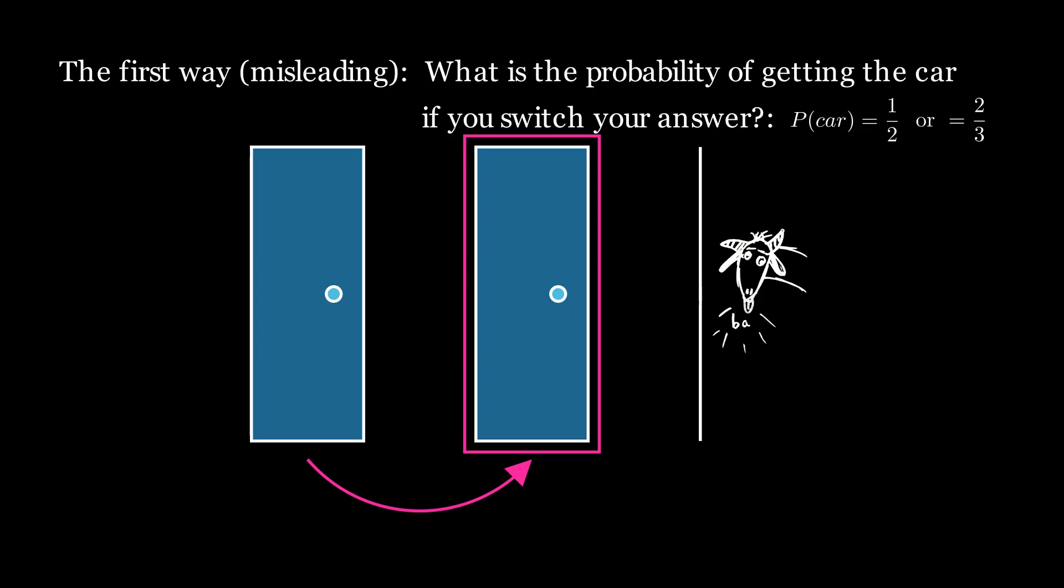The key line is this. What is the probability of getting the car if you switch your answer? This is ambiguous because there are multiple reasonable reasons you might switch your answer.